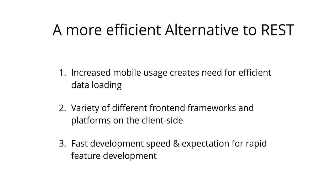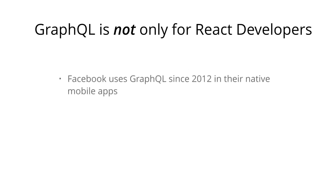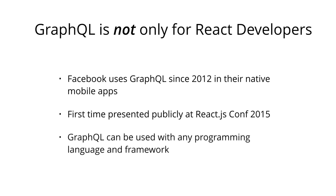Now that we've got a bit more perspective on the concept of REST, let's understand a bit more about the history of GraphQL and how it came to be. Facebook started using GraphQL already in 2012 in their native mobile apps. The first time Facebook publicly spoke about GraphQL was at React.js Conf 2015, and shortly after they announced their plans to open source it. Because Facebook always used to speak about GraphQL in the context of React, it took a while for non-React developers to understand that GraphQL was by no means a technology limited to usage with React.